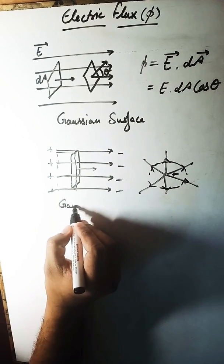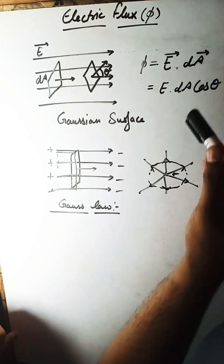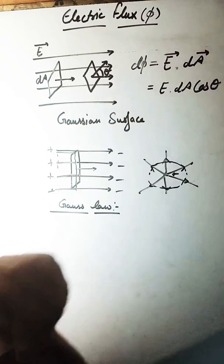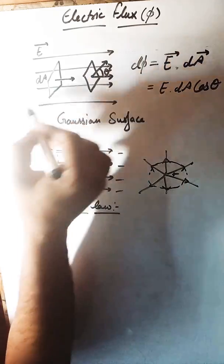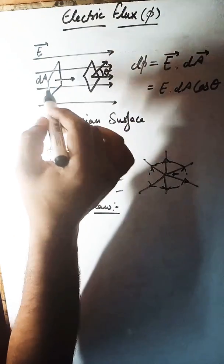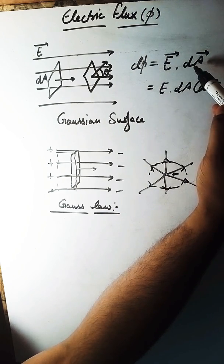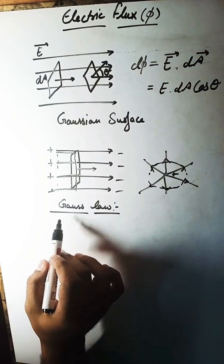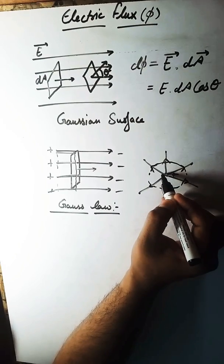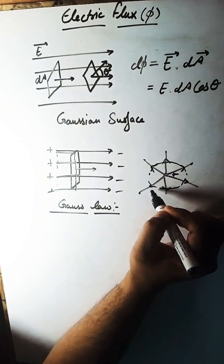Now that we understand Gaussian surface, we are ready to go through Gauss's law. When we discuss electric flux for a small area dA, we get a small flux d-phi because this small area does not cover all the flux released from the charge. However, if we consider the full Gaussian surface, it contains each and every field line released by the charge.